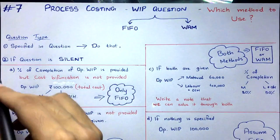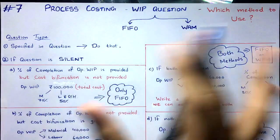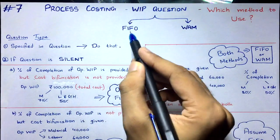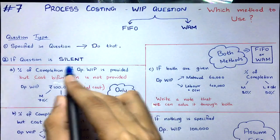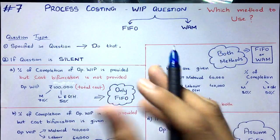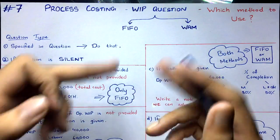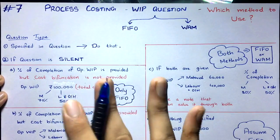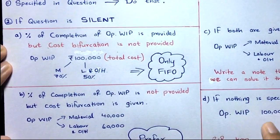The second type is where the question is silent — it does not tell you whether to use FIFO or WAM. In that case, there will be some hints in the question, and through those hints you will be able to understand which method to use. These silent questions are divided into four cases.